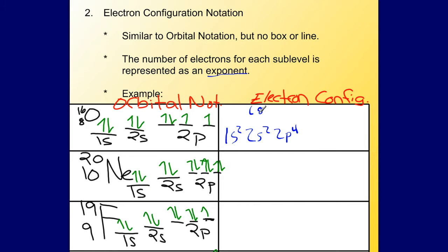So the electron configuration, which is basically shorthand of orbital notation, is going to be 1s2, 2s2, 2p4 for oxygen.